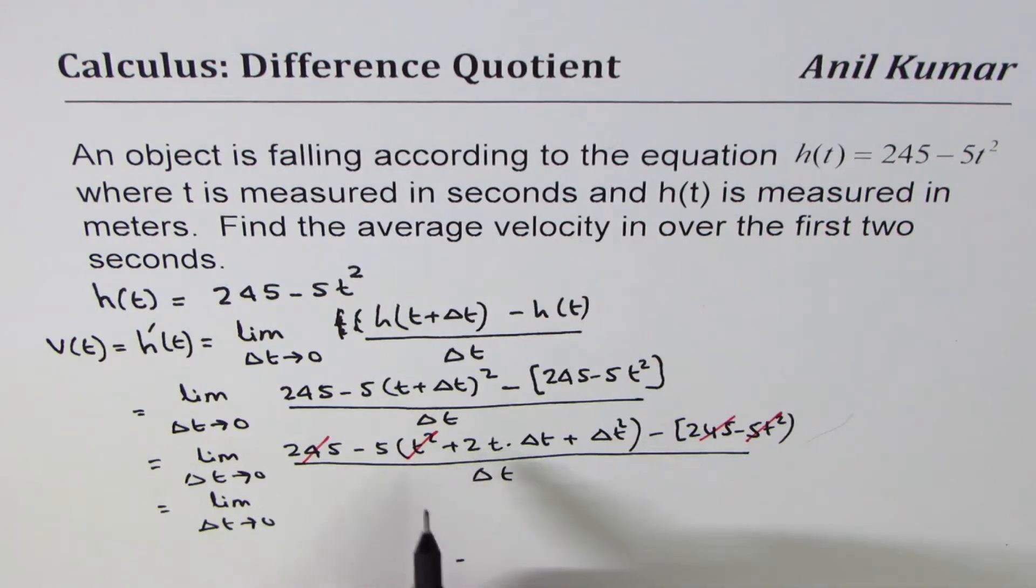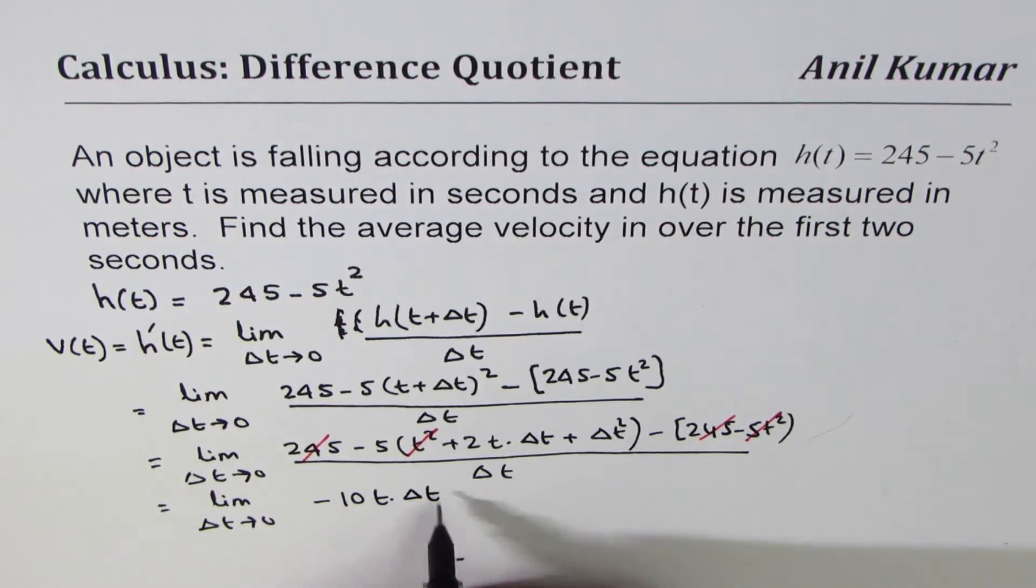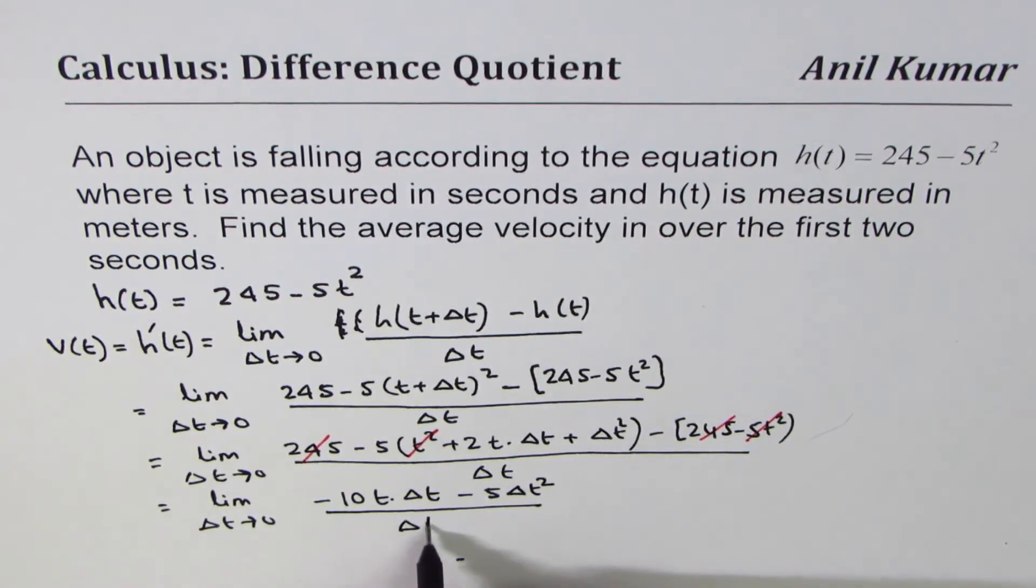So what we are left with, now I'll open the bracket. So we have -5 times 2, that's -10t·Δt and -5Δt², divided by Δt.